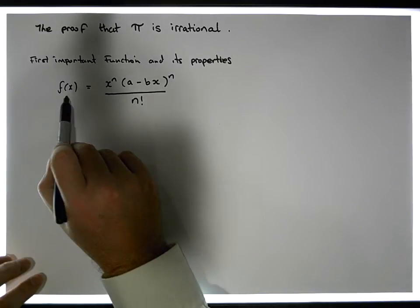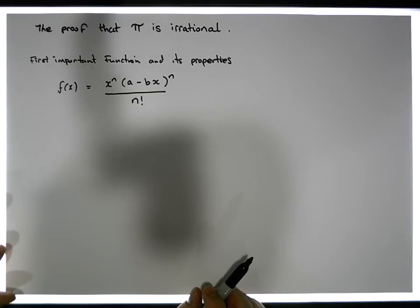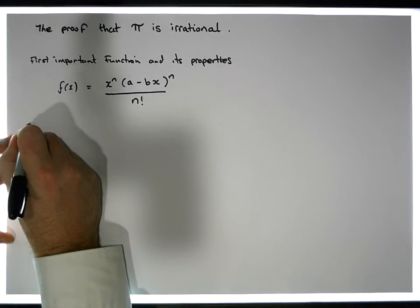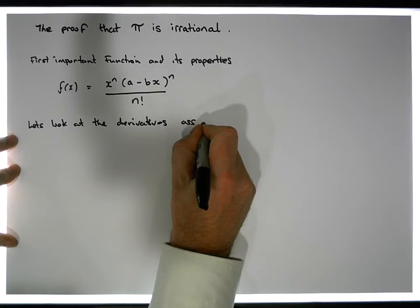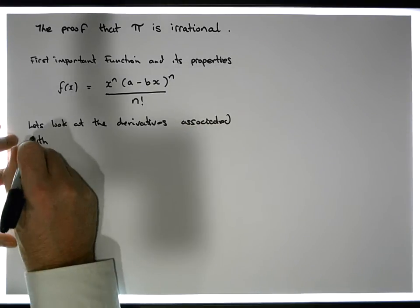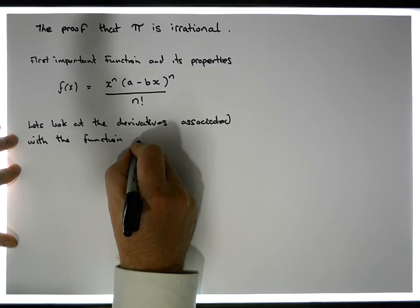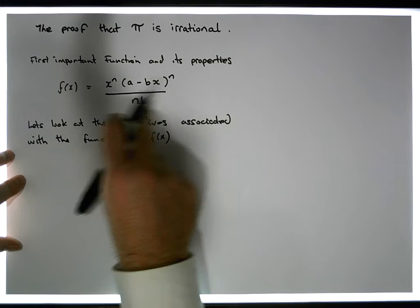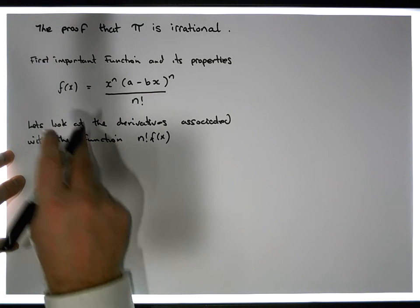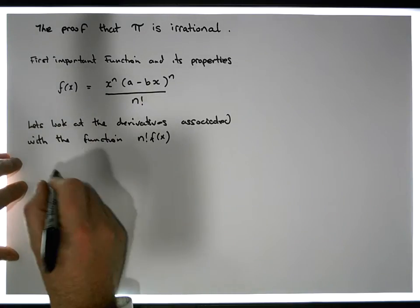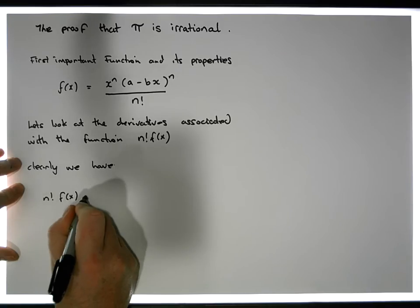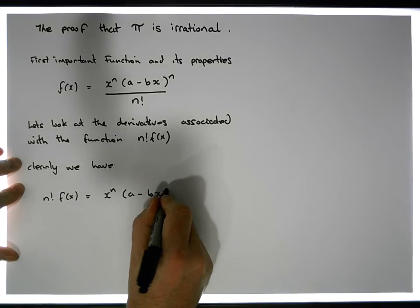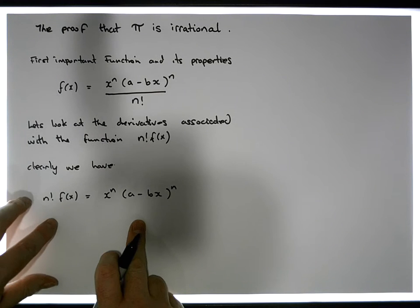What we want to look at initially are the derivatives associated with the function n factorial times f of x. Clearly, if f of x equals this particular function, then n factorial times f of x must be equal to x to the n times (a minus bx) to the power of n. If this is true, then that particular fact must be true.